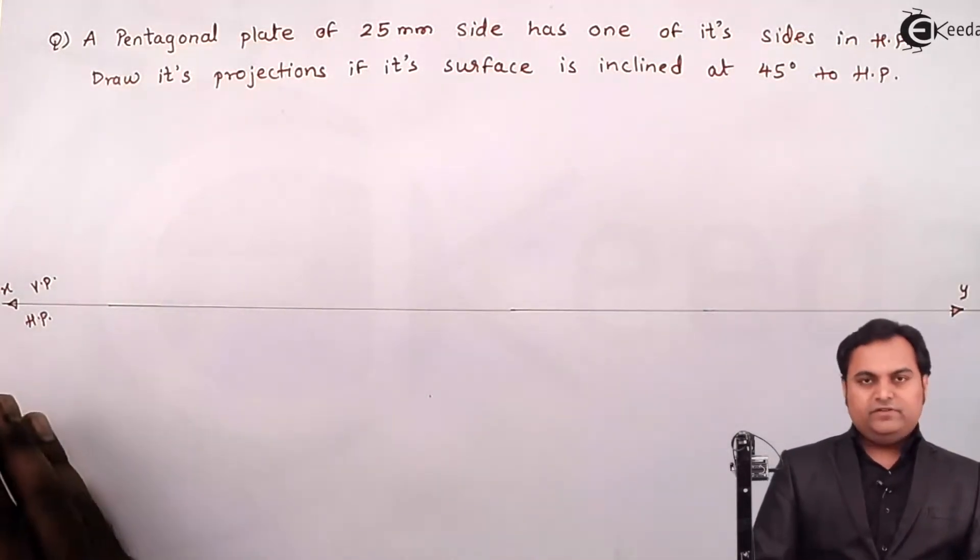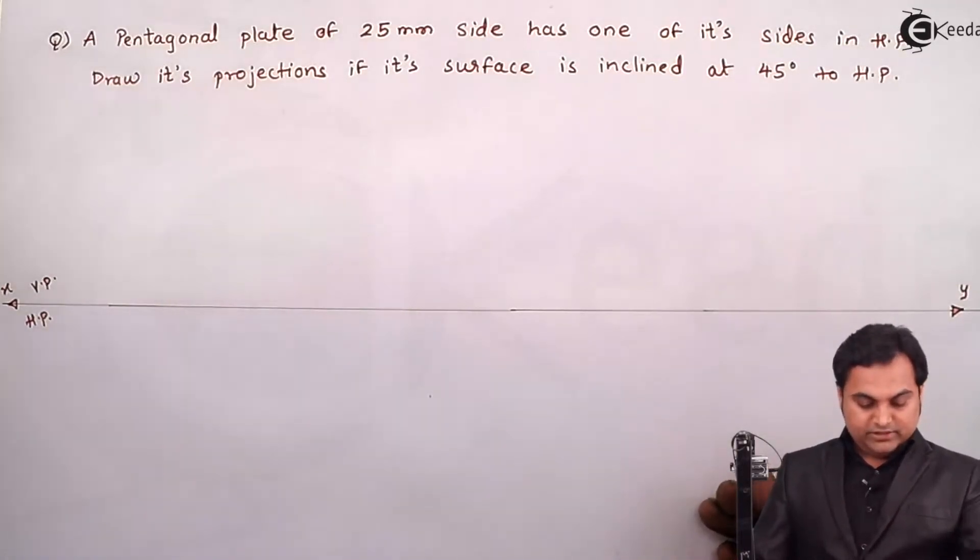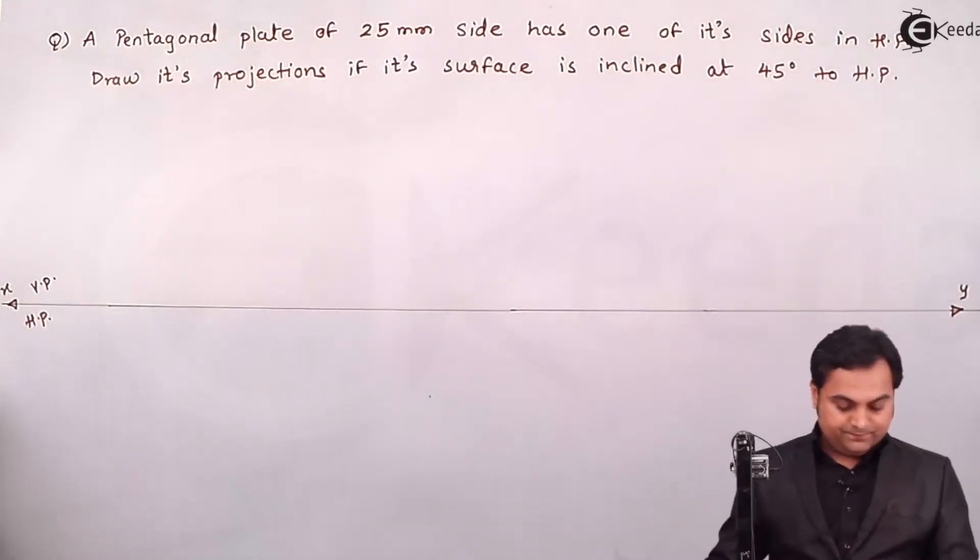That side will be taken on the left hand side because in case of planes the left hand side is the reference for us. Now here I draw a light vertical line in HP.